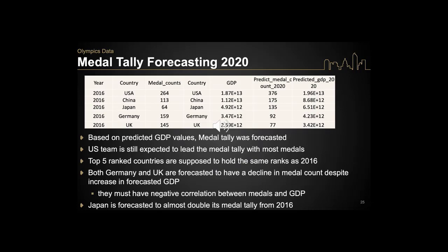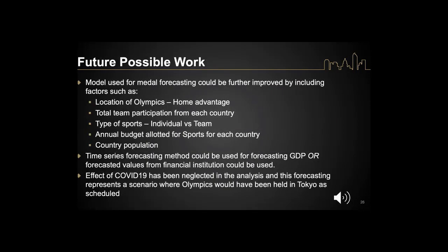As for future possible work, we could look at multiple other factors such as the location of the Olympics, since home advantage does help in winning medals more so than other countries. Total team participation from each country could also be considered, as well as separating individual sports from team sports. More so than GDP, the annual budget allotted for sports for each country might be a more useful factor. Country population could also be considered. Time series forecasting could have been performed for GDP, or forecasted values from financial institutions could have been used. Additionally, the effect of COVID and the postponement of the Olympics has not been considered here.